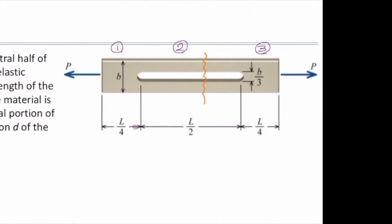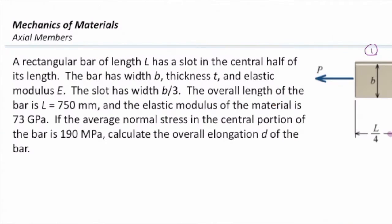A rectangular bar of length L has a slot in the central half of its length. The bar has width B, thickness T, and elastic modulus E, so it's parametric.